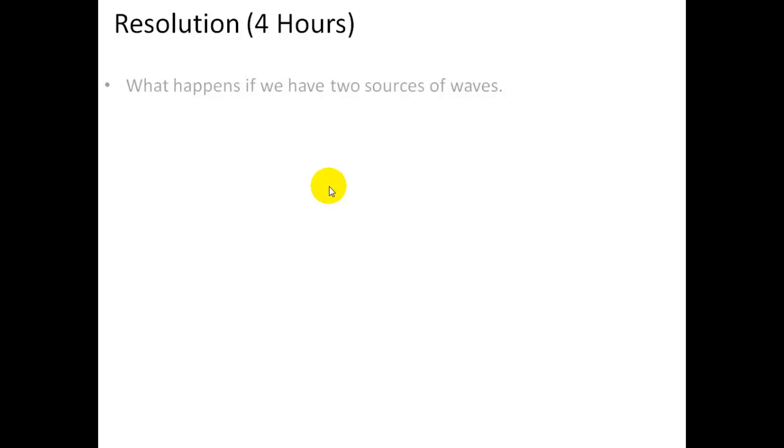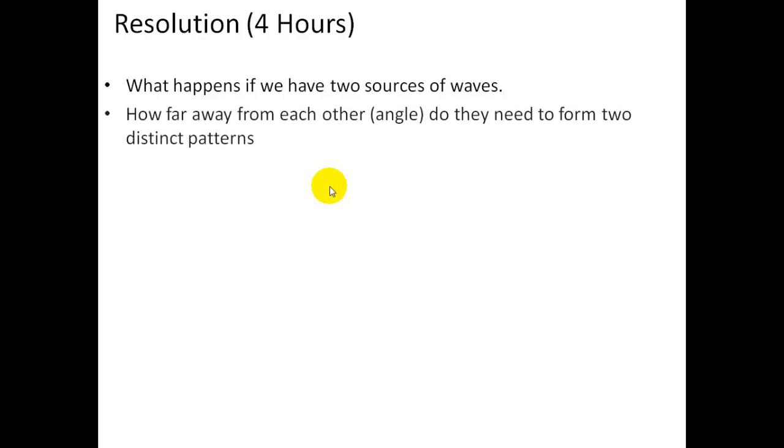So resolution: when we have two sources of waves, how far apart do they need to be in terms of an angle from the aperture, from where they're observed, for them to form two distinct patterns? If they're both in the same place, the images will completely overlap so they cannot be separated, they can't be resolved. If they're a very wide angle apart, then they form two images.